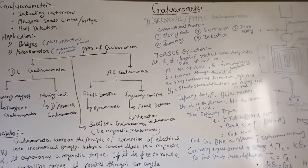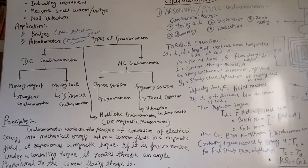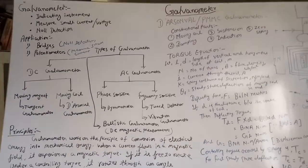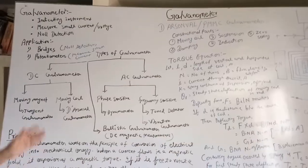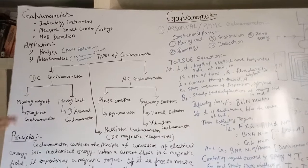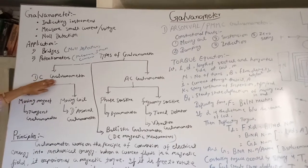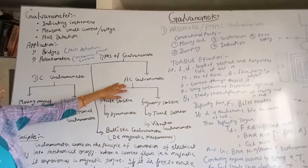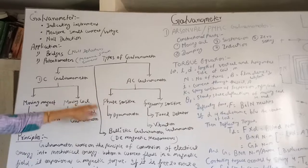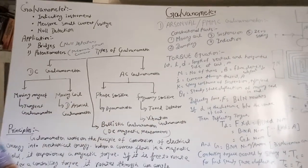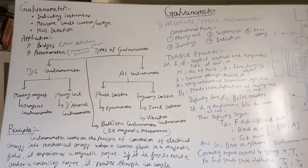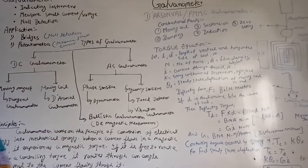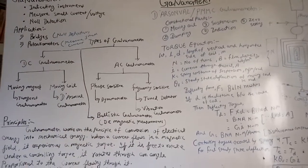On the basis of their uses, the galvanometer is classified into three categories: one is DC galvanometer, second is AC galvanometer, and the third one is ballistic galvanometer. Ballistic galvanometer is also known as DC magnetic measurements.